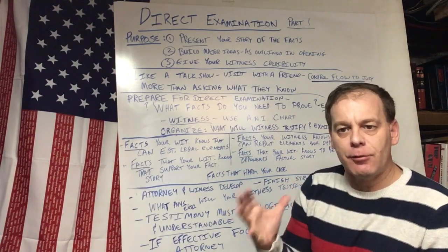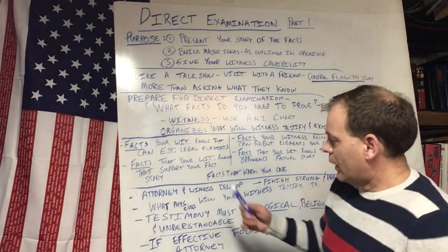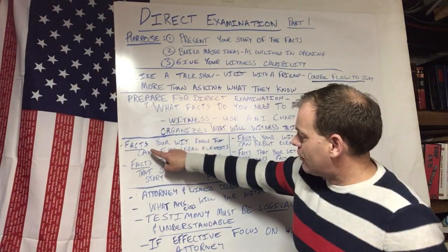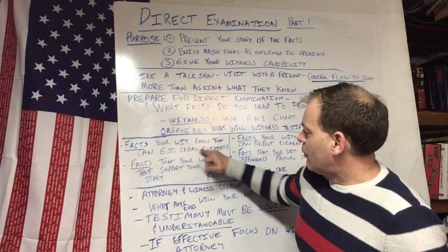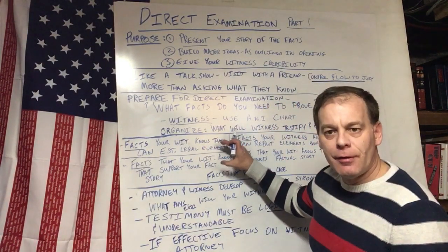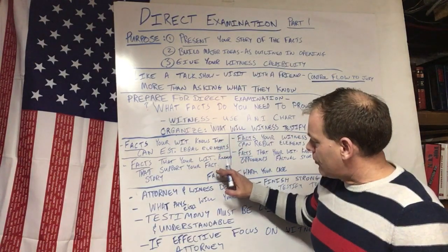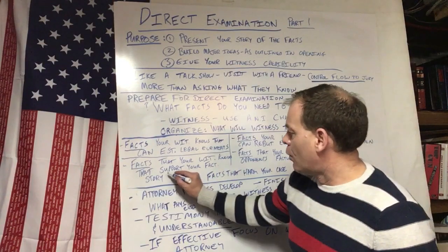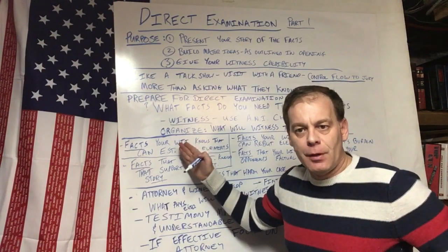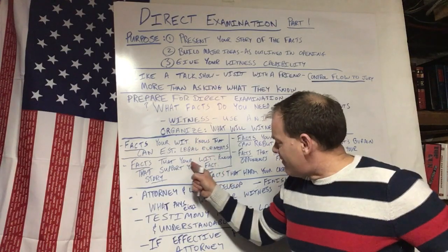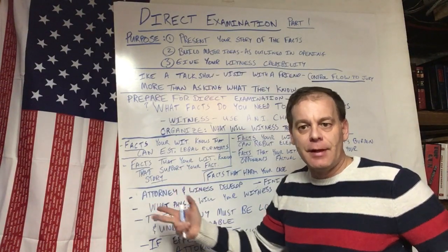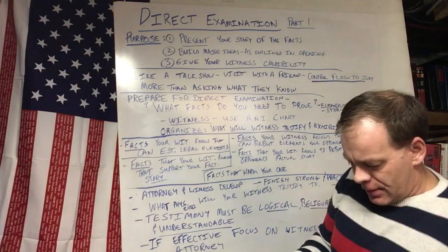There are five categories of things witnesses may testify to in direct examination. The first is facts that can establish the legal elements of what you have to prove. The second is facts that support your factual story — your factual theory of the case. So those are two parts: facts through their testimony that support your legal elements, and facts that support your factual story.